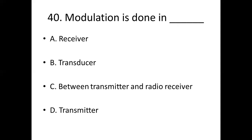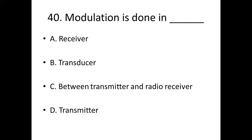Fortieth bit. Modulation is done in dash. Option A: receiver. Option B: transducer. Option C: between transmitter and radio receiver. Option D: transmitter. Answer: Option D, transmitter.